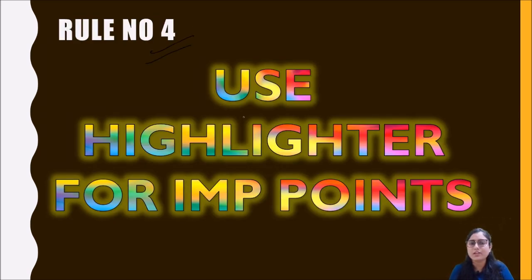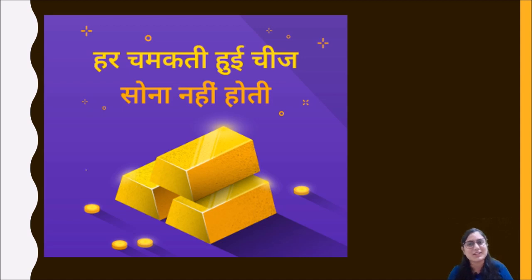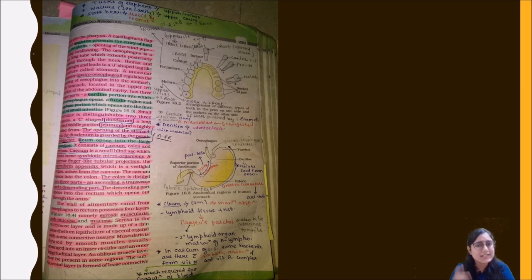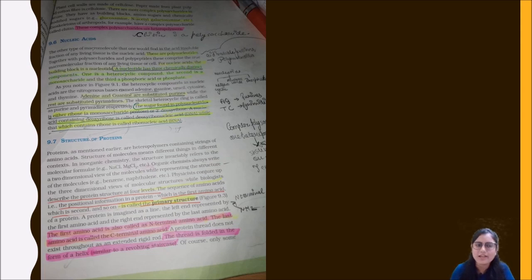Rule number 4: use a highlighter for important points. This is something very important. Not everything is equally important. When you open an entire paragraph, not every line from letter 1 to the end is important. A lot of students highlight almost everything, which makes it very difficult to read. Don't do that. Some important lines are actually light — highlight only one key word or key line, not the whole book.